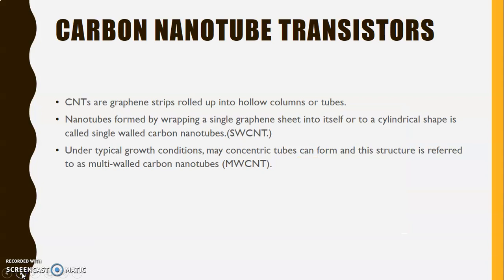CNTs are graphene strips rolled up into hollow columns or tubes. What is graphene? A single layer of carbon sheet in graphite is called graphene. Nanotubes formed by wrapping a single graphene sheet into itself or to a cylindrical shape is called single walled carbon nanotubes or SWCNTs.